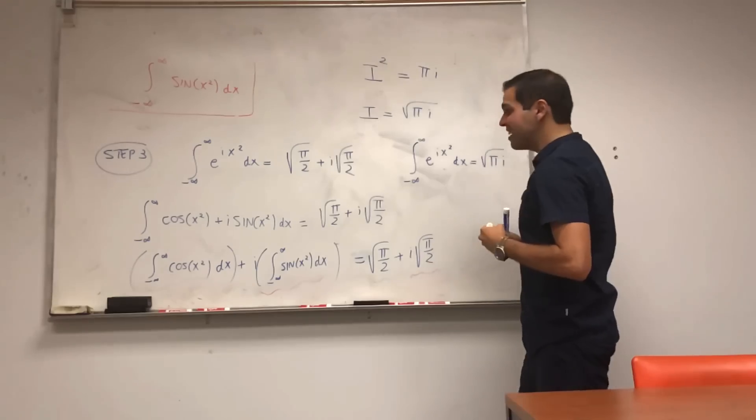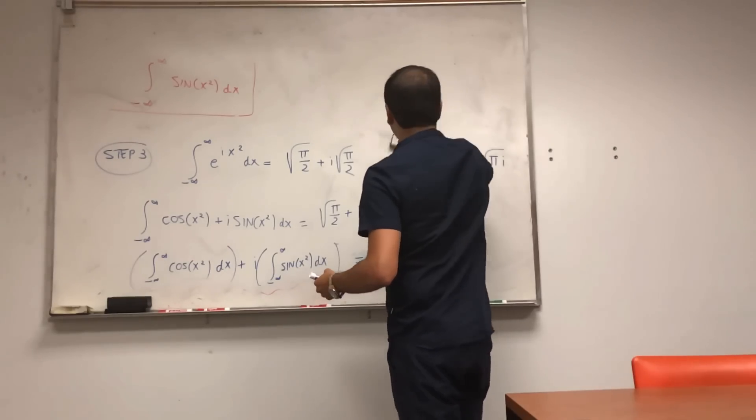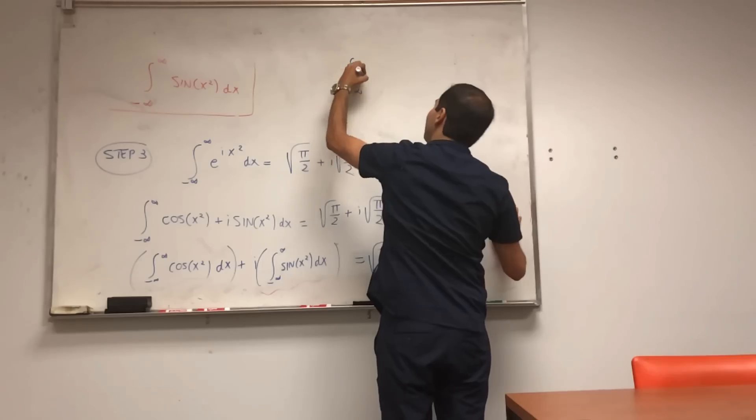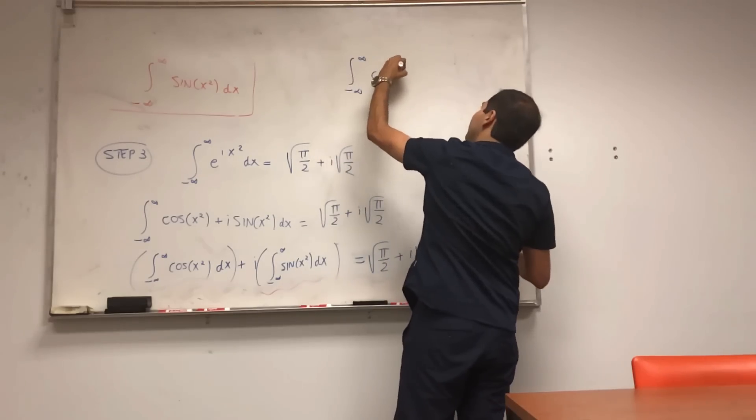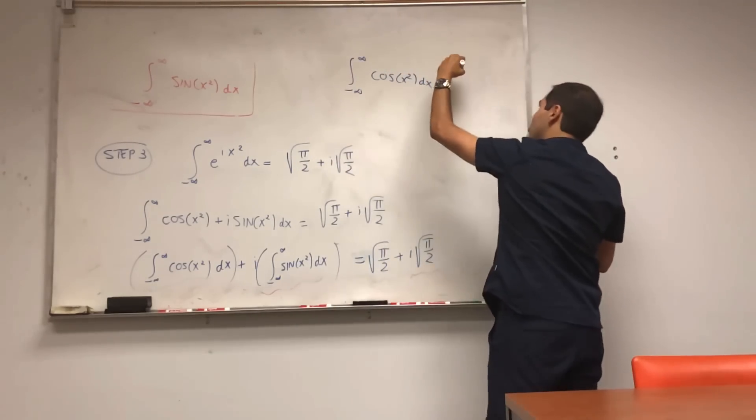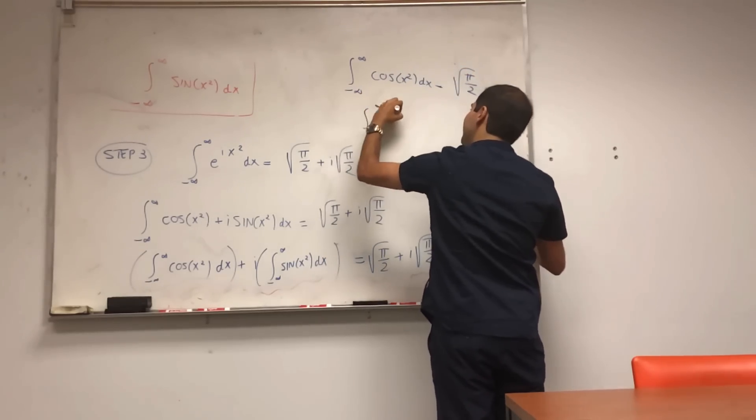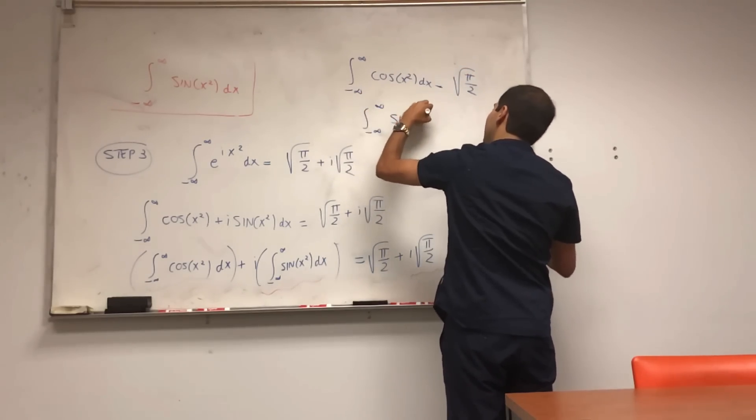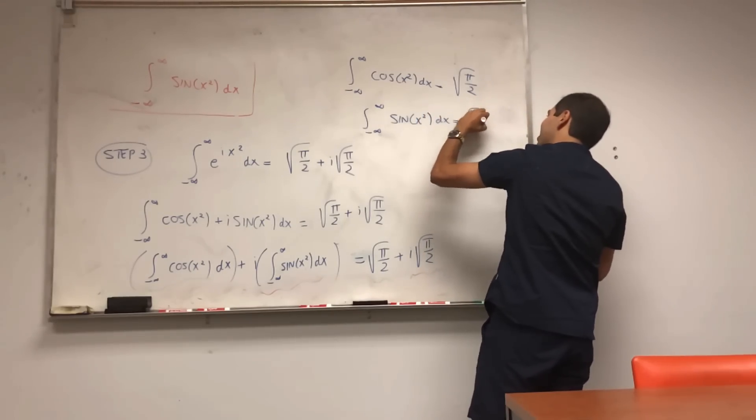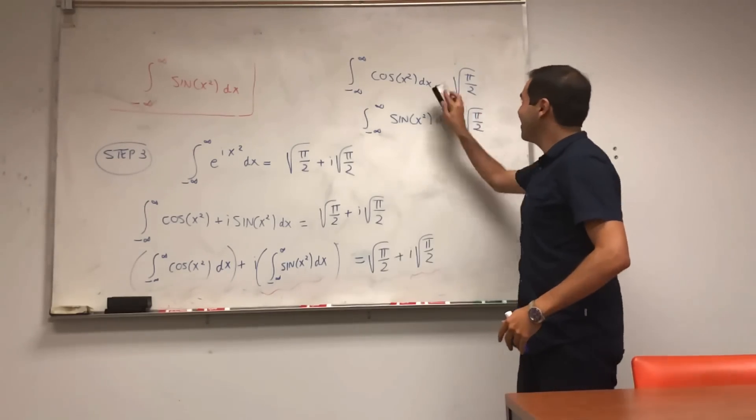And now all you're going to do is compare the two. And interestingly, you do get the same value. So it turns out that then integral from minus infinity to infinity cosine x squared dx, that's square root of pi over two. And integral from minus infinity to infinity sine of x squared dx is also square root of pi over two.